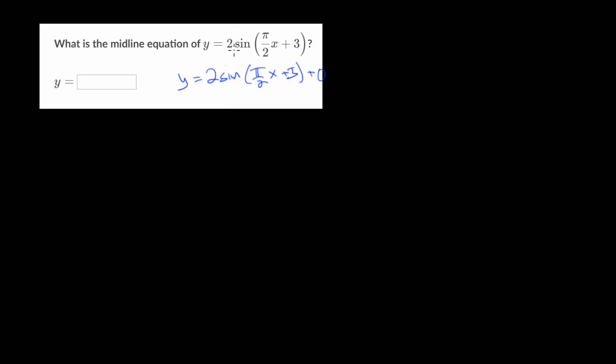meaning we are not shifting the parent function up or down. And we know the parent function for sine has a midline value of 0 or midline equation of y equals 0. And since we are not adding or subtracting on the outside, we will not shift this function vertically. And this equation will also have a midline equation of y equals 0. We'll have an amplitude of 2. And this π over 2 here will affect the period while this plus 3 will shift it to the left horizontally.